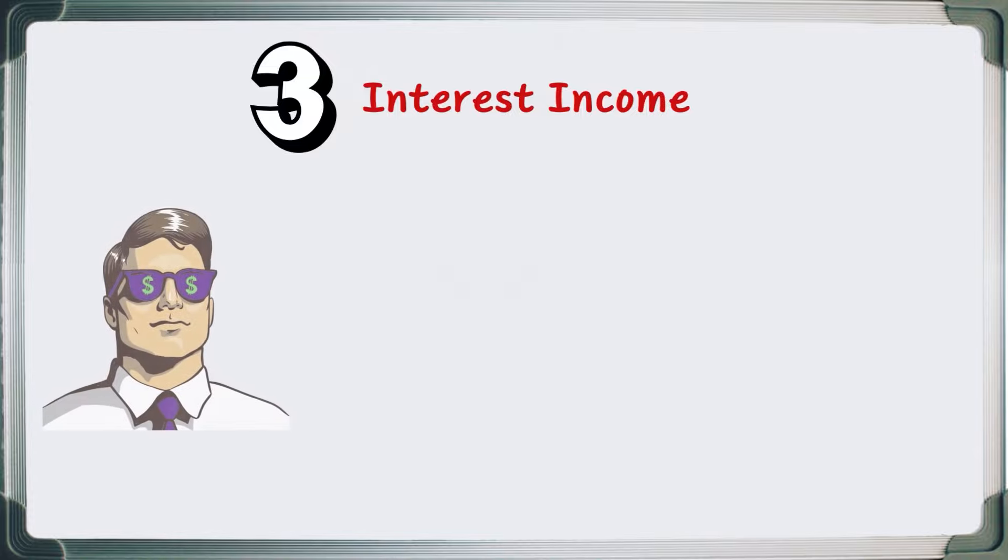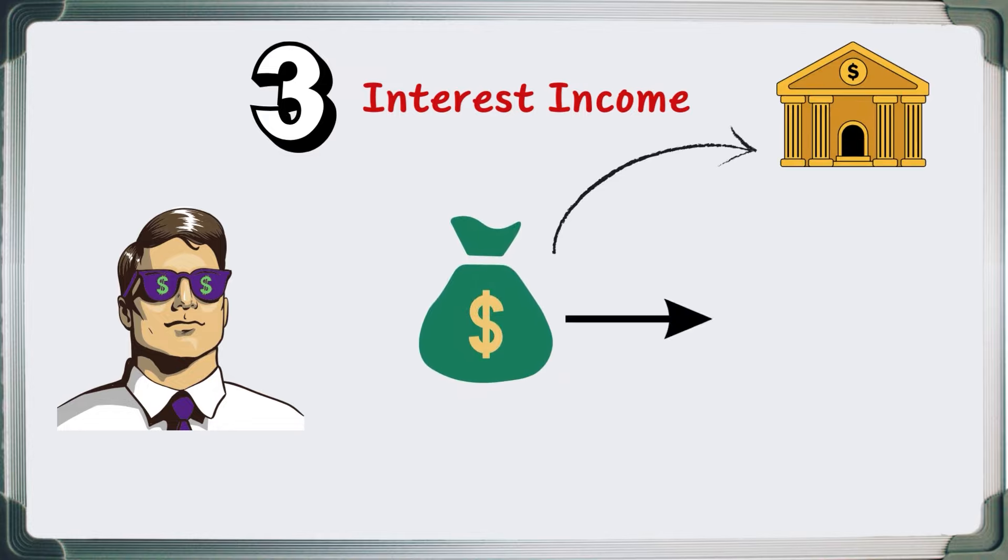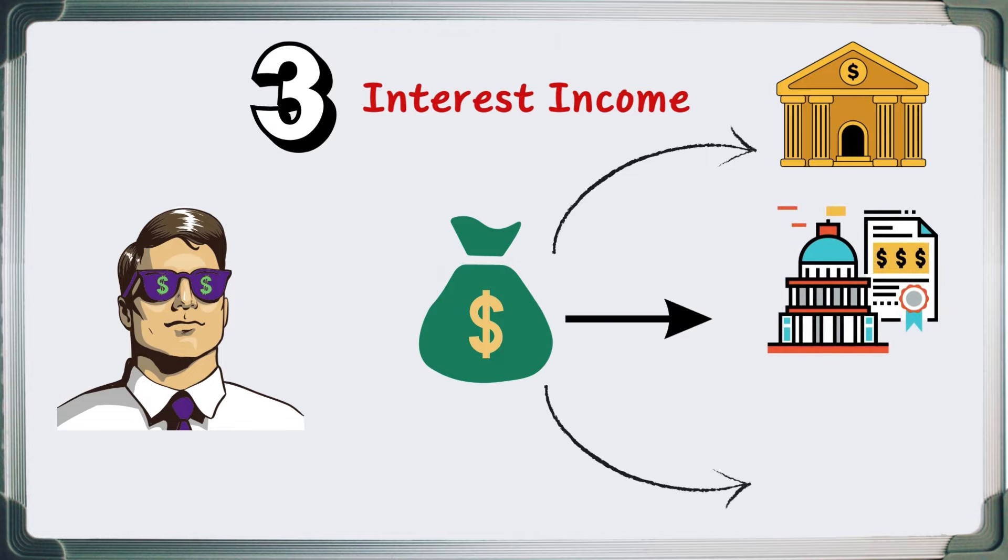Number three: Interest Income. This isn't a common income stream, but again, millionaires are anything but common. This income comes from lending money in exchange for interest, whether it's saving money in the bank, investing in government treasury bonds, or loaning money to someone.